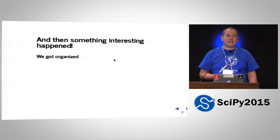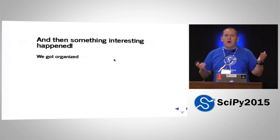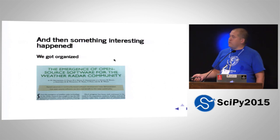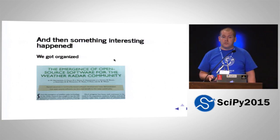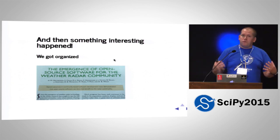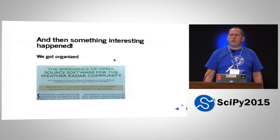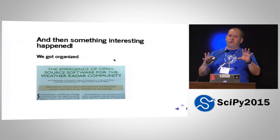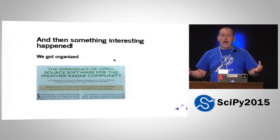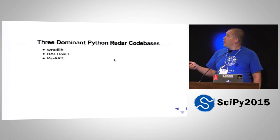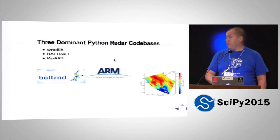Out of the blue, we got an email saying there's this guy in Germany — Mike Heistermann from the University of Potsdam — who said he wanted to capture what's happening in the whole open source radar community. Within about three months, we had an article in BAMS that described what we're doing. Writing this paper forced us to sit down as a community and ask where we want to be going. The outcome was to define all our toolkits, where they sat, and how they interoperated. There are three dominant radar codes: RadLib, Boltrad, and PyArt.